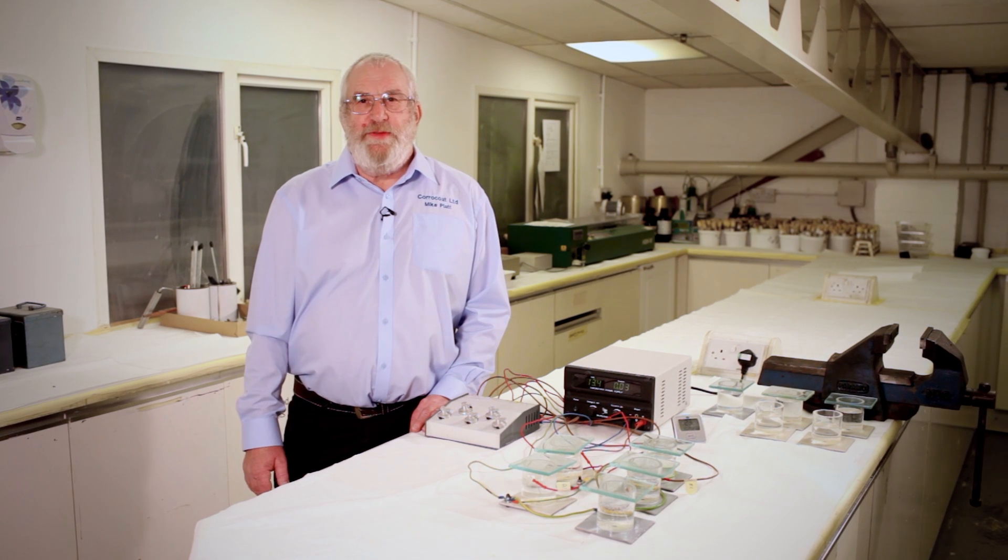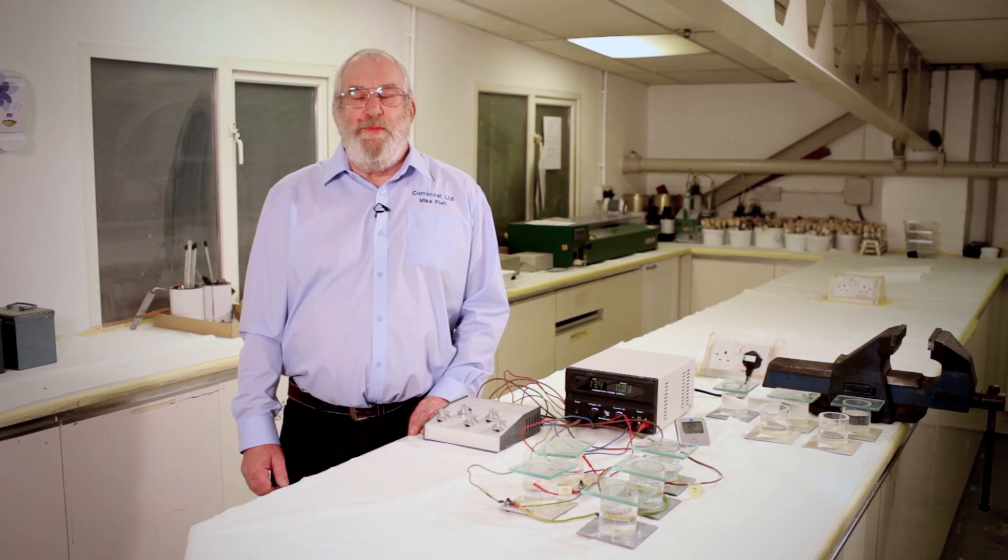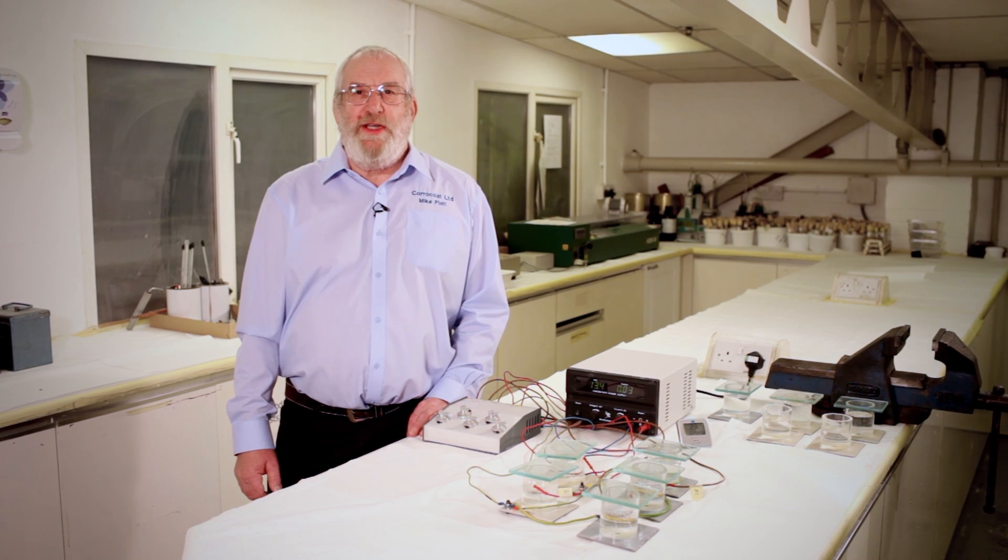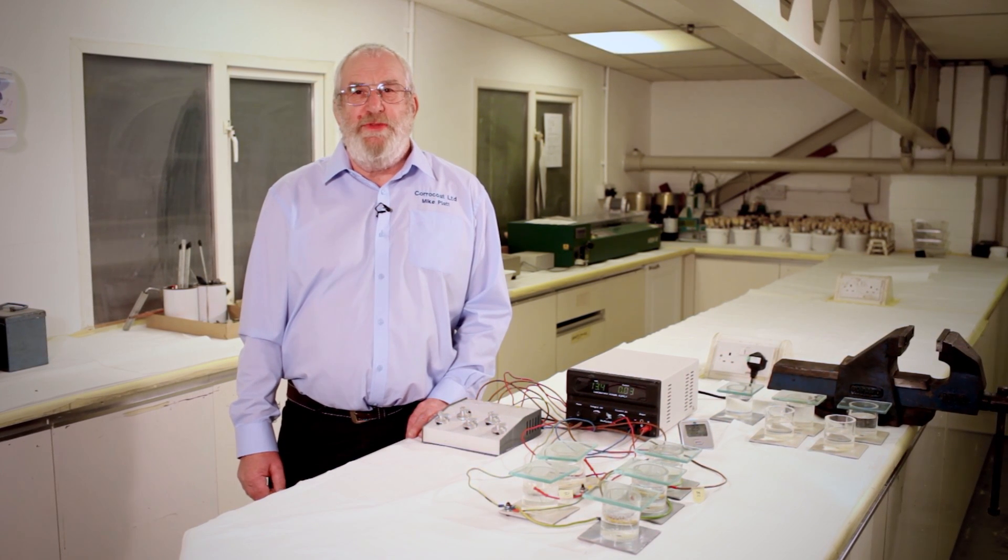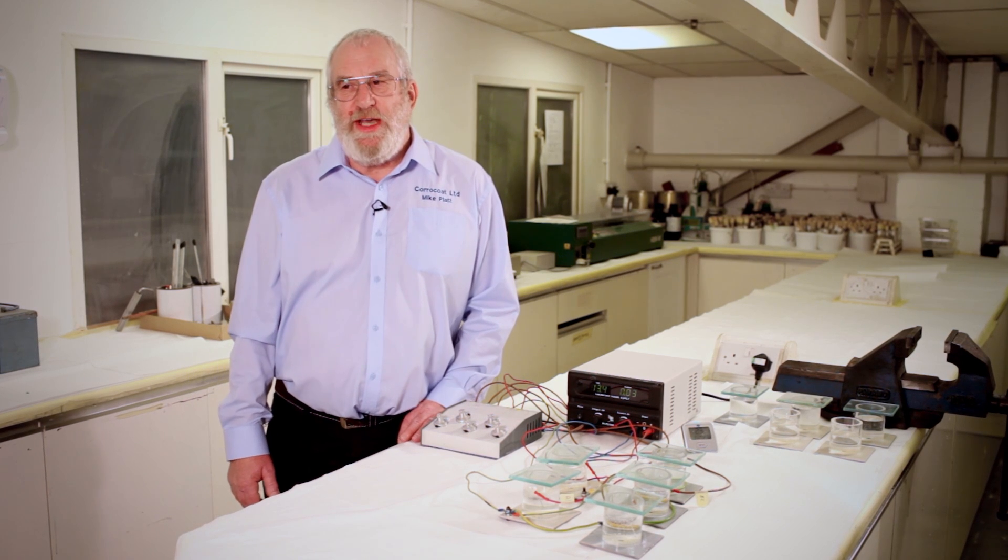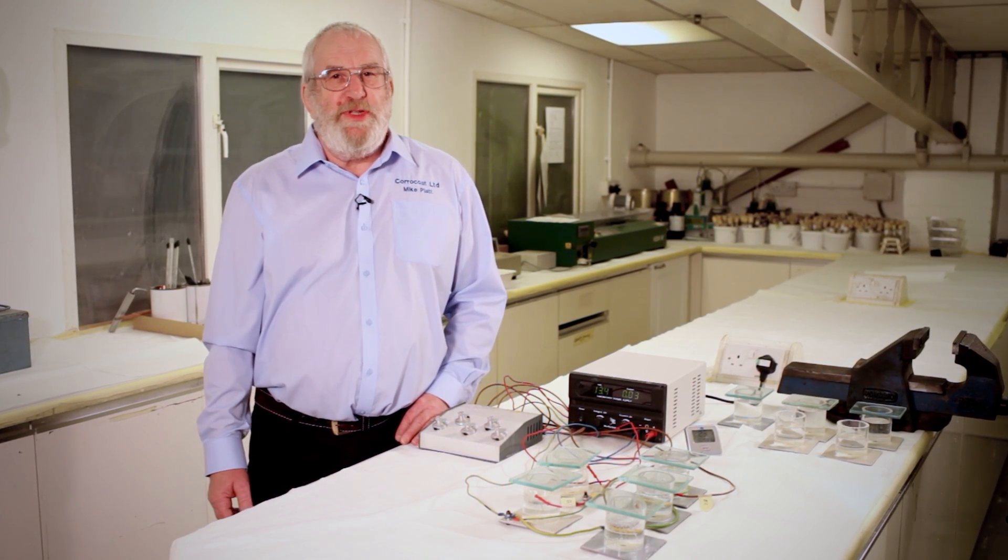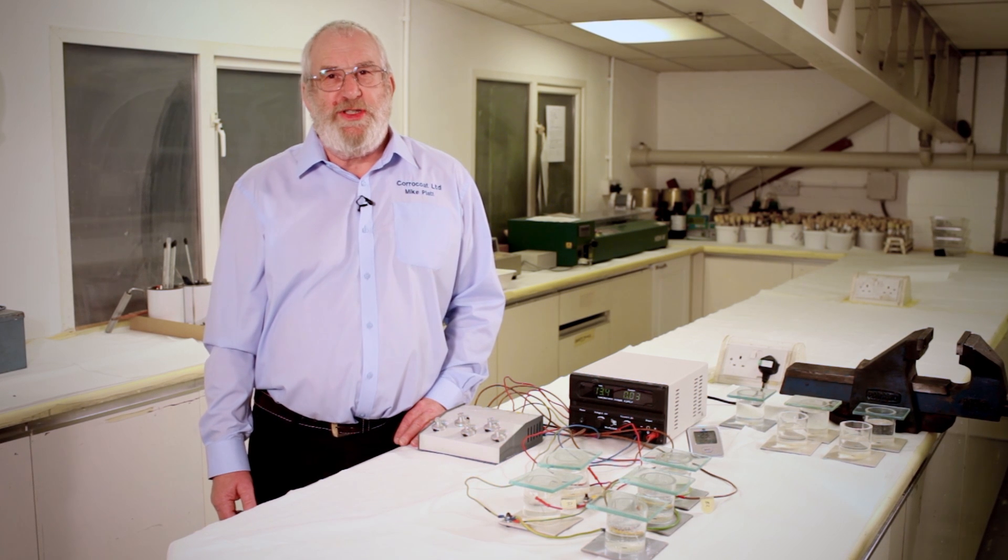Several tests for cathodic disbondment have been promulgated over the years. But the one we prefer at Coracoat is the most aggressive, can be carried out quickly and gives accurate, repeatable and consistent results. It's a sort of sorting men from the boys test. The downside is that the area of disbondment is sometimes difficult to ascertain.